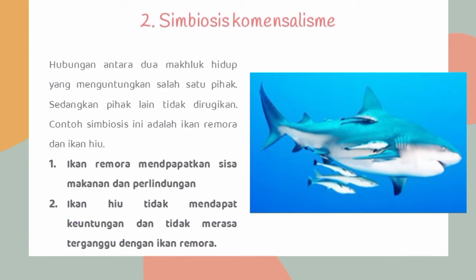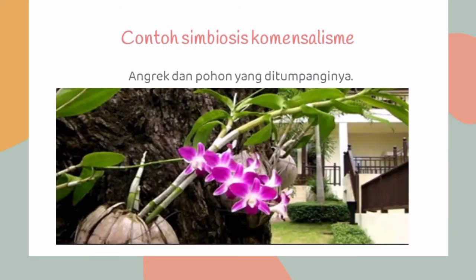Simbiosis komensalisme adalah hubungan antara dua makhluk hidup yang menguntungkan salah satu pihak, sedangkan pihak lain tidak dirugikan. Contoh simbiosis ini adalah ikan remora dan ikan hiu. Ikan remora mendapatkan sisa makanan dan perlindungan dari ikan hiu, sedangkan ikan hiu tidak mendapat keuntungan dan juga tidak merasa terganggu. Contoh lain yaitu anggrek dan pohon yang ditumpanginya. Anggrek mendapatkan tempat tinggal dari pohon tersebut, namun tidak mengambil makanan dari pohon, sehingga pohon tidak dirugikan.